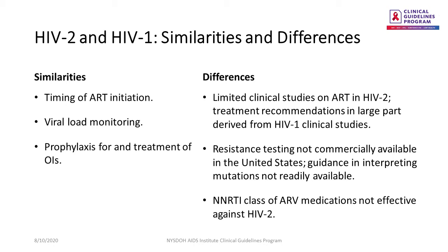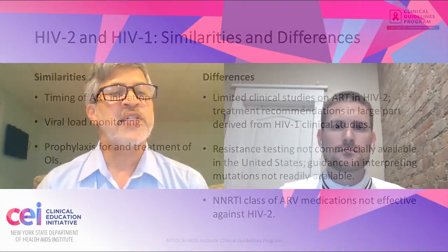Now, when it comes to differences, due to limited clinical trials of antiretroviral treatment in people with HIV-2, therapy recommendations for HIV-2 are mostly derived from studies done in HIV-1. Also, resistance testing in the form of genotype or phenotype for HIV-2 is not commercially available in the United States. So decisions on switching therapy have to be based on clinical parameters and assumptions of cross-resistance patterns. And the next difference is the most important: certain medications used for HIV-1 are not effective against HIV-2. Specifically, the non-nucleoside reverse transcriptase inhibitor class (NNRTIs), the recently approved attachment inhibitor Fostemsevir, the fusion inhibitor Enfuvirtide, and the protease inhibitor Atazanavir are not effective against HIV-2. That being said, this won't impact initial treatment recommendations, which are based on integrase inhibitor therapy, which are effective against HIV-2.